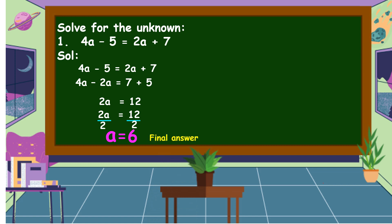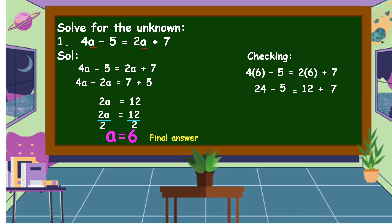Let's check if our answer is correct. We use the original equation and substitute A equals 6. So: 4 times 6 minus 5 equals 2 times 6 plus 7. 4 times 6 is 24; 24 minus 5 is 19. 2 times 6 is 12; 12 plus 7 is 19. Both sides equal 19, so the equation is balanced and the value of A equals 6 is correct.